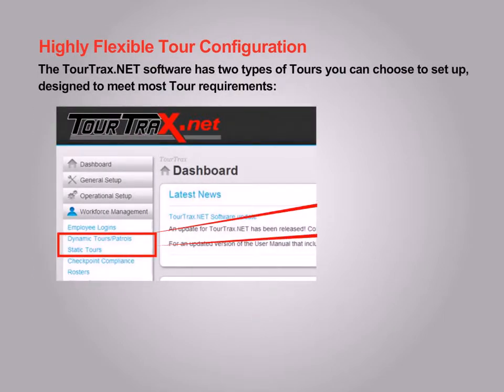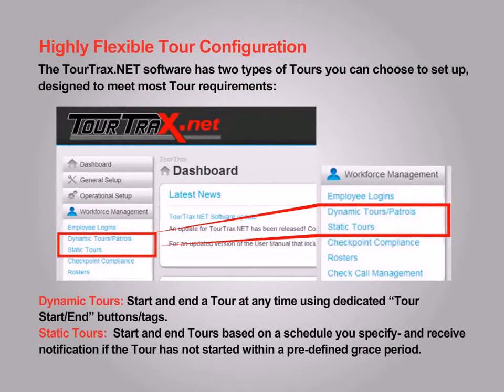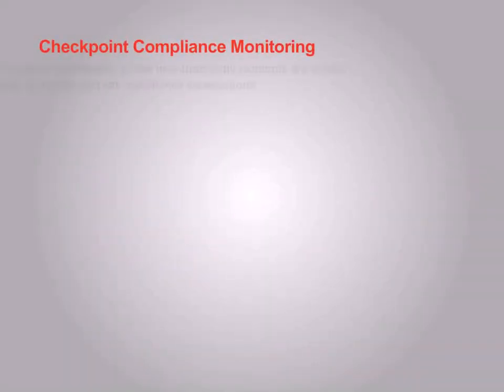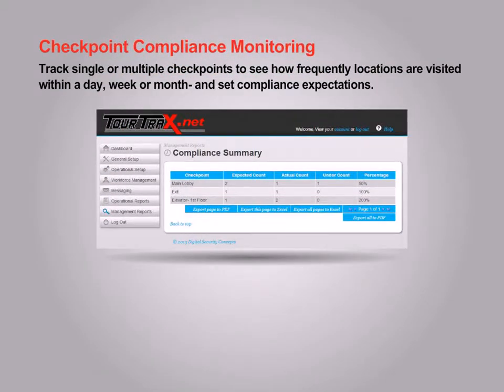Highly flexible tour configuration. The TourTrax.net software has two types of tours you can choose to set up, designed to meet most tour requirements. Dynamic tours: start and end a tour at any time using dedicated tour start and end buttons or tags. Static tours: start and end tours based on a schedule you specify, and receive notification if the tour has not started within a pre-defined grace period. Checkpoint compliance monitoring allows you to track single or multiple checkpoints to see how frequently locations are visited within a day, week, or month, and set compliance expectations.